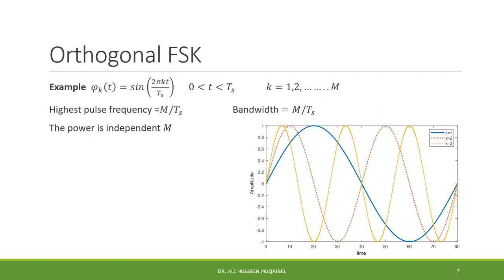One important type of FSK is orthogonal FSK. In orthogonal FSK, the frequencies chosen are orthogonal to each other. For example, you transmit a sinusoid covering one bit — from 0 to Tb, where Tb is the duration of one bit or symbol.